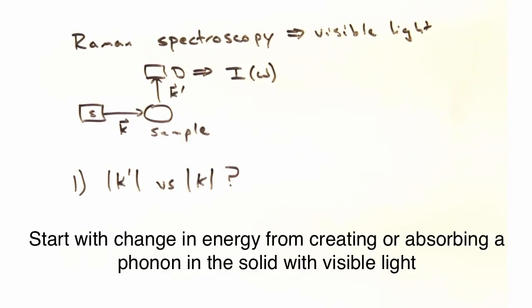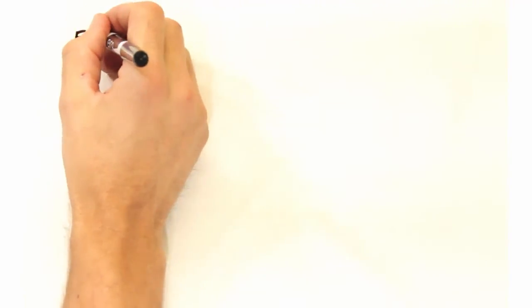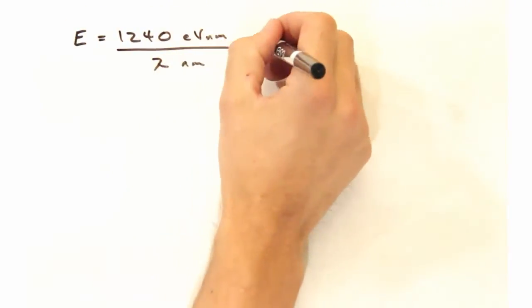Let's start by considering the magnitude of k prime versus k for visible light. To answer that question, first of all we need to remind ourselves how much change in energy is possible with either creating or absorbing the phonon of visible light.